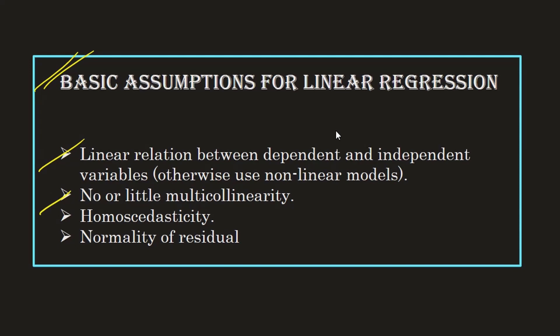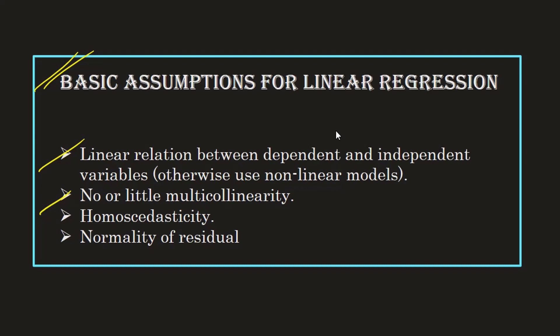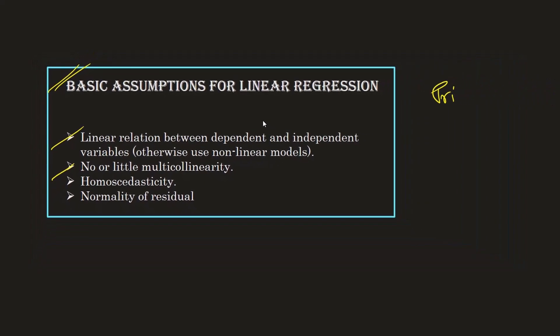The second assumption is that there should be no or very little multicollinearity. Multicollinearity is the relation between two independent variables. Let's try to understand this: let's say we are trying to predict the price of a house.